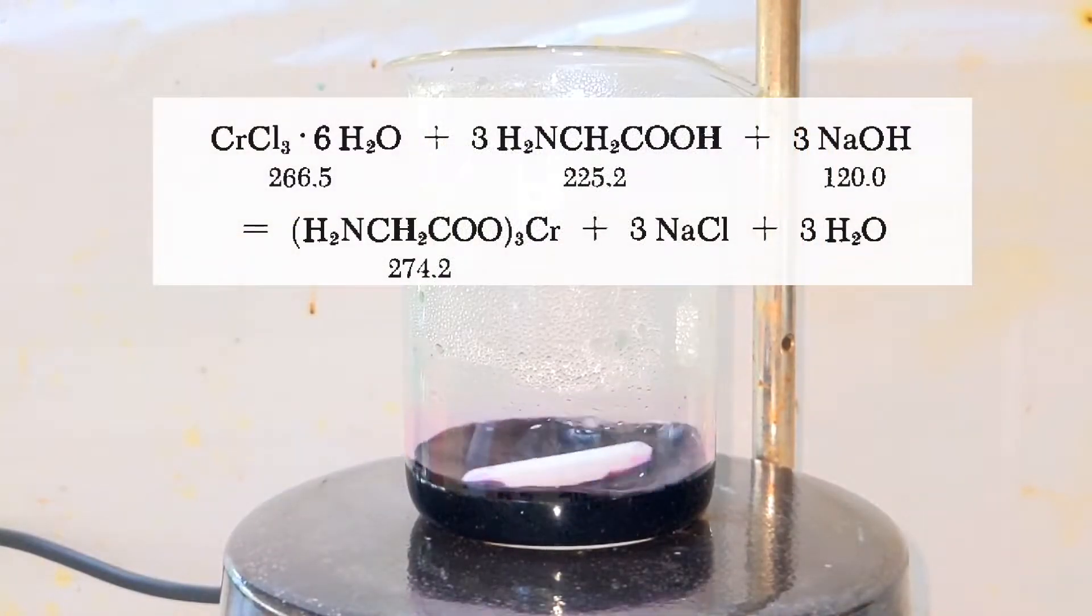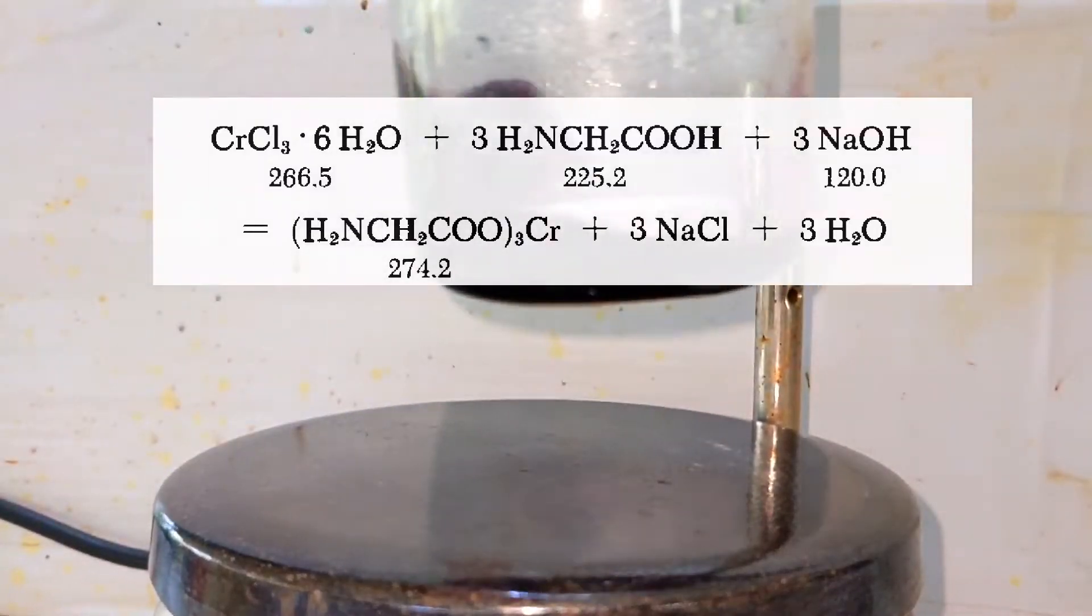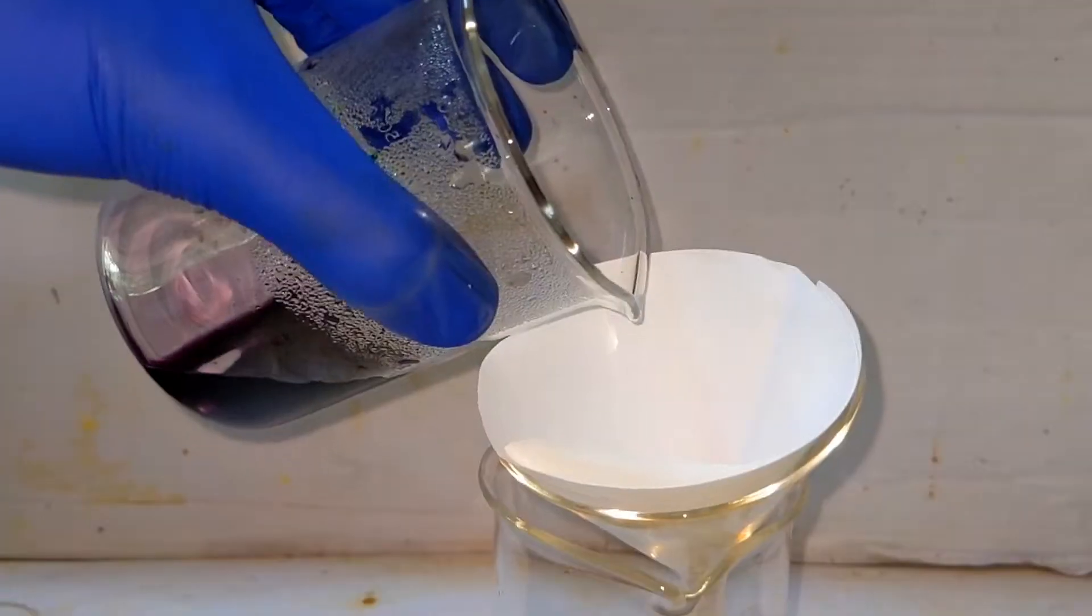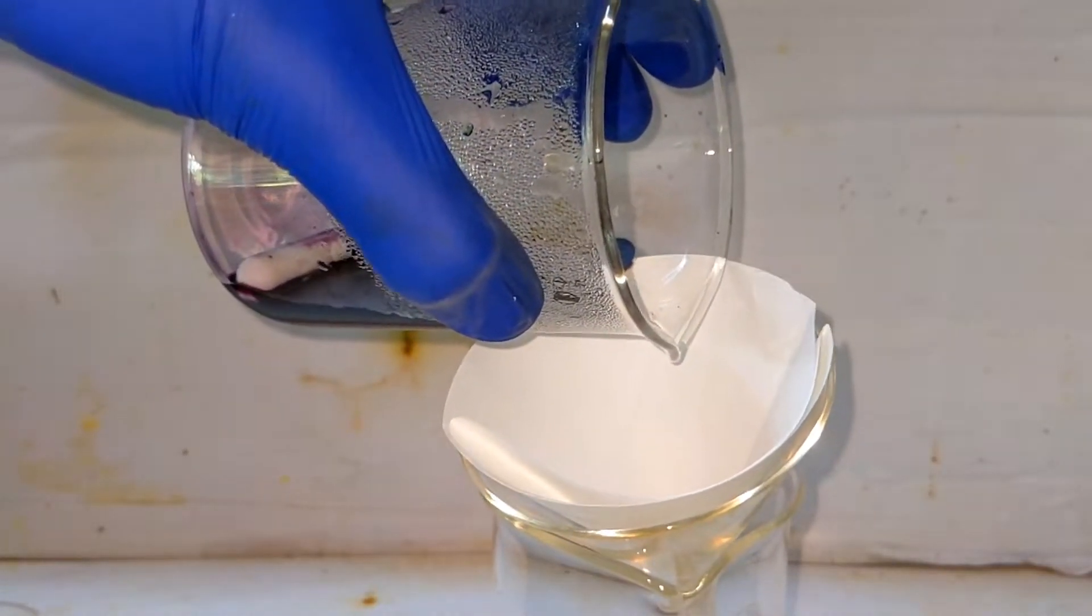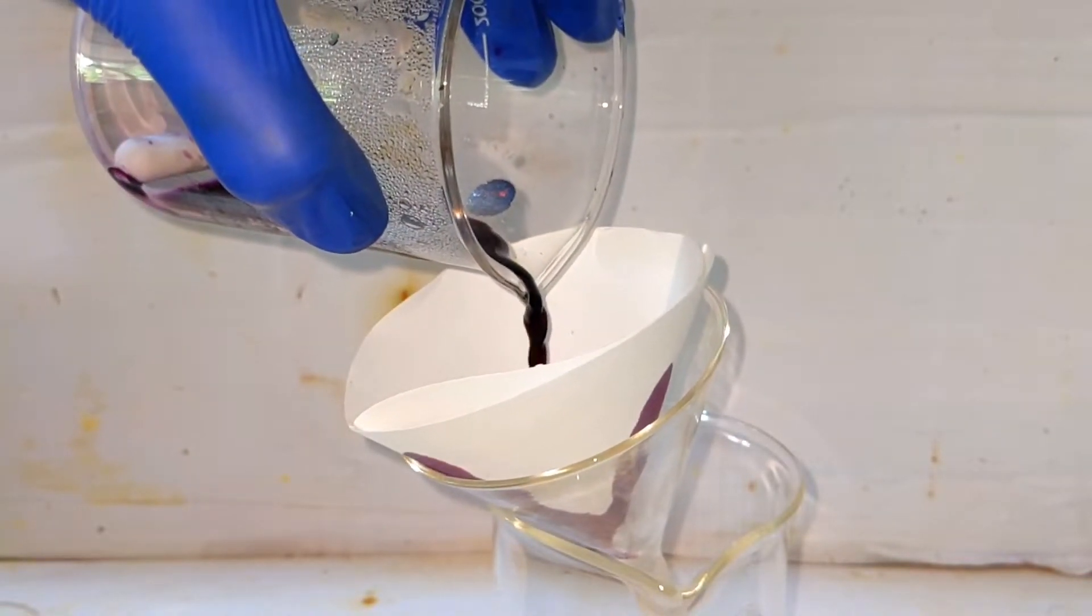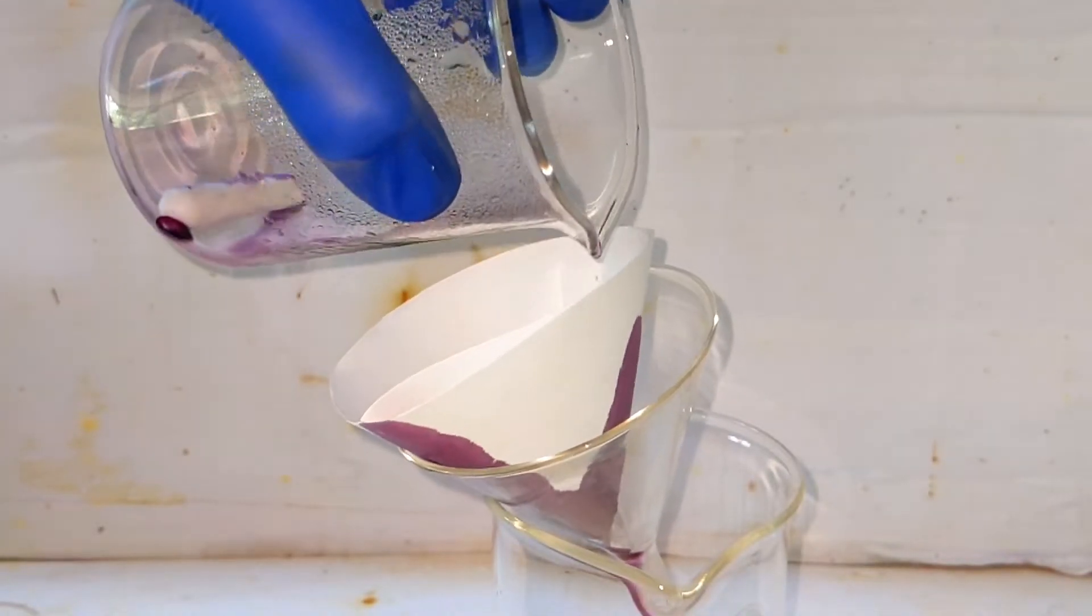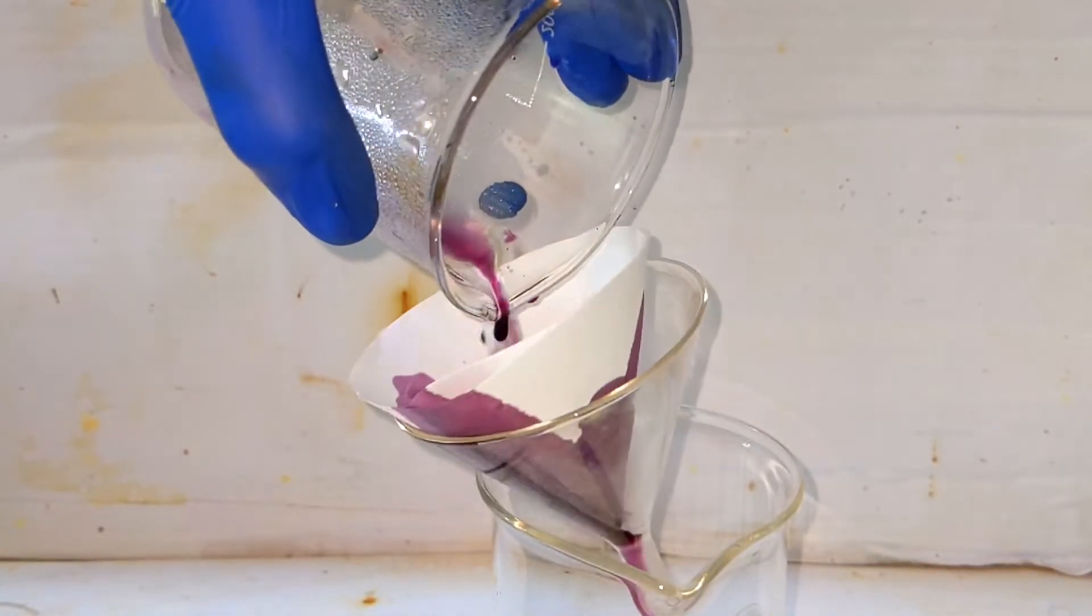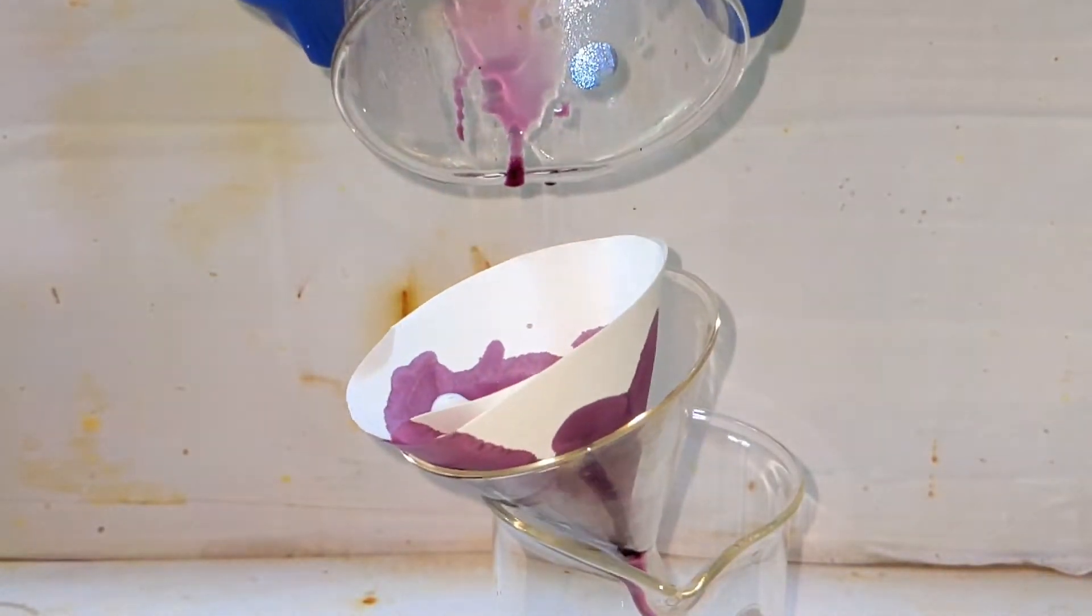What happened here is the chromium formed a complex with glycine, that is the chromium-3-glycinate. We have to filter the solution in order to remove any precipitate that has formed. According to the literature, a precipitate should be formed, but in my case I did not get any precipitate and the complete solution just filtered over into the receiving beaker.